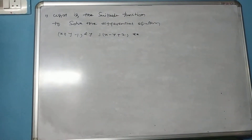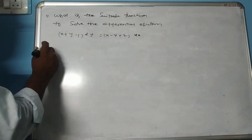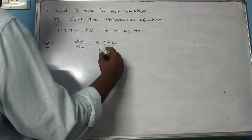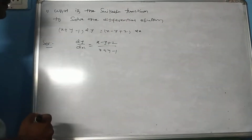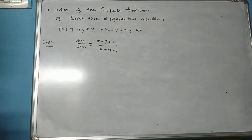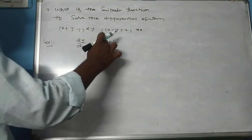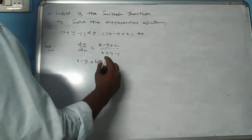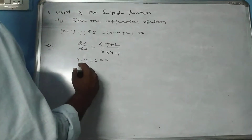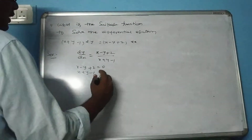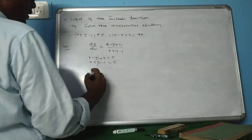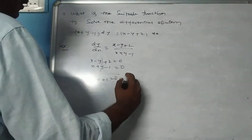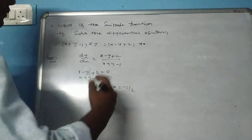This equation can be written as 2x + 1 minus (x + y - 1). I am solving these equations: x minus y plus 2 equals 0, x plus y minus 1 equals 0. Adding these gives 2x plus 1 equals 0, so x equals minus 1 by 2.